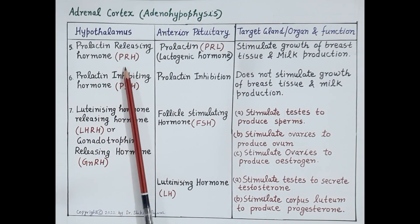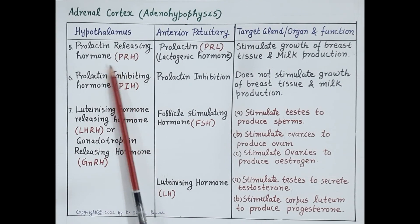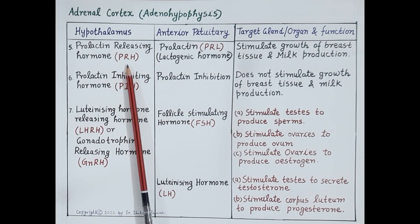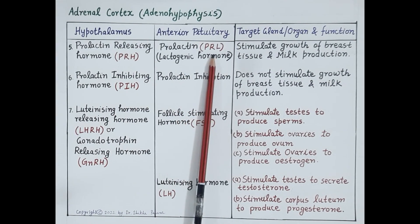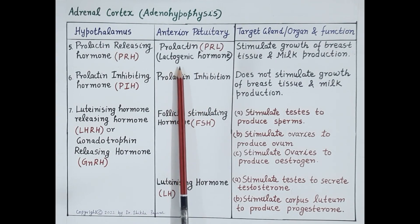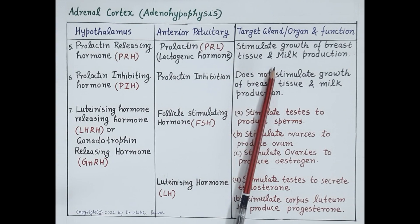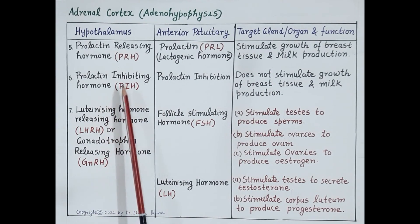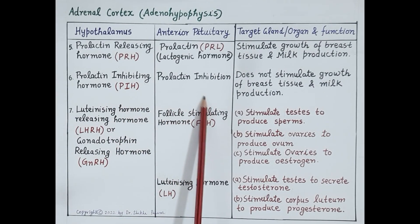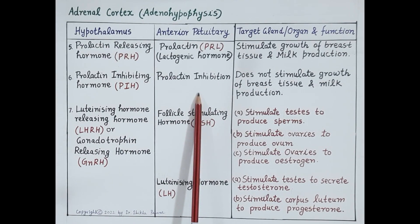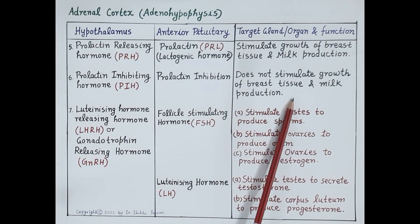Another hormone released by hypothalamus is PRH (prolactin releasing hormone). Prolactin is a lactogenic hormone — lacto refers to milk — so prolactin stimulates growth of breast tissue and is required for the production of milk. Hypothalamus also releases PIH (prolactin inhibiting hormone), which inhibits release of prolactin by the anterior pituitary, thus suppressing growth of breast tissue and milk production.